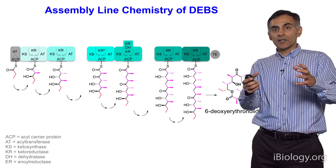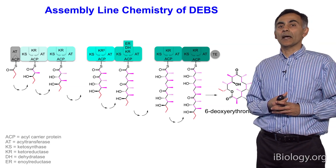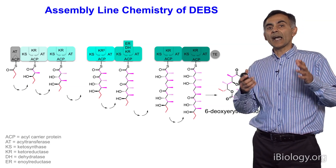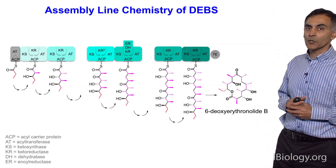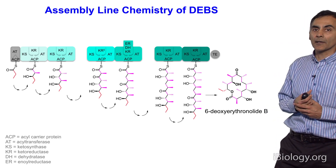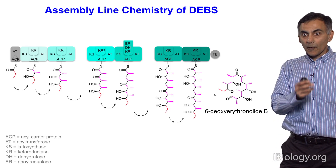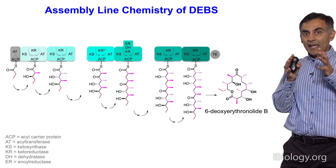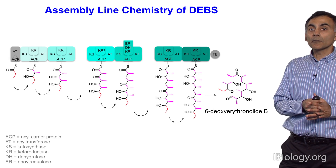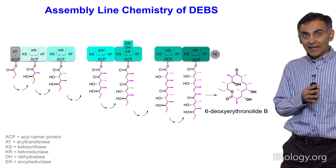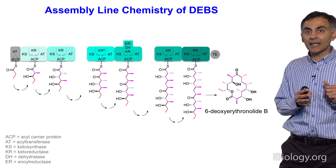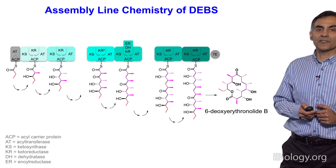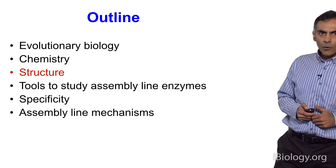Now that you understand what Module 3 does, it becomes relatively easy to see how each of the six modules of the 6-deoxyerythronolide B synthase performs a set of catalytic operations — in each case on a methylmalonyl extender unit and a unique incoming polyketide chain — to give you the product that comes out of this assembly line.